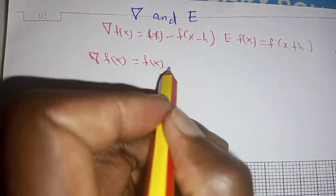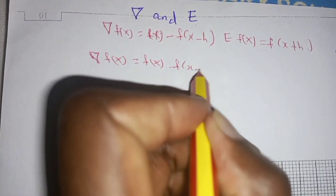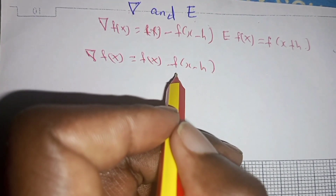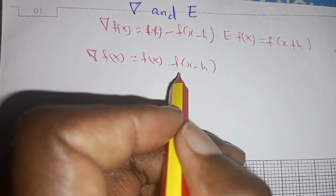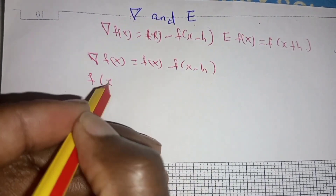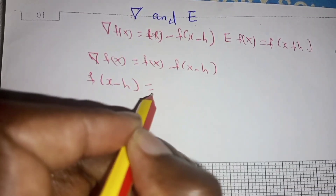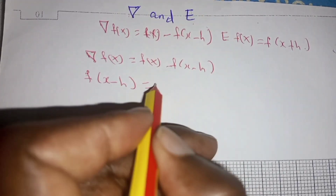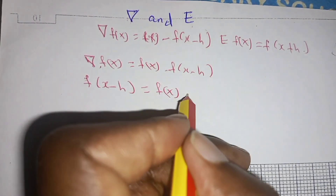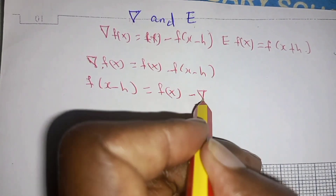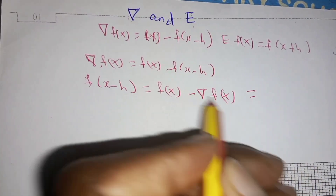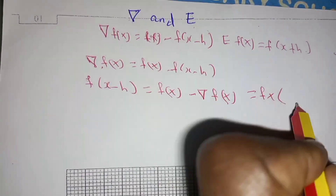From the definition of the backward difference operator, nabla f(x) equals f(x) minus f(x minus h). We rearrange this so that f(x minus h) is equal to f(x) minus the backward difference operator applied to f(x), moving the term to the right-hand side so it becomes negative.